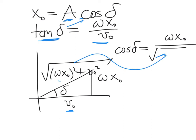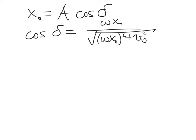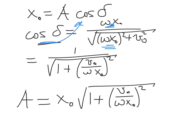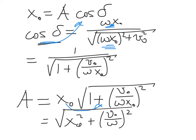We can simplify by dividing out the ωx₀ term, writing cos δ = 1 / √(1 + (v₀/ωx₀)²). Plugging this back in and solving for A, we find the amplitude is A = √(x₀² + (v₀/ω)²). This is our amplitude expressed in terms of the initial displacement and velocity.